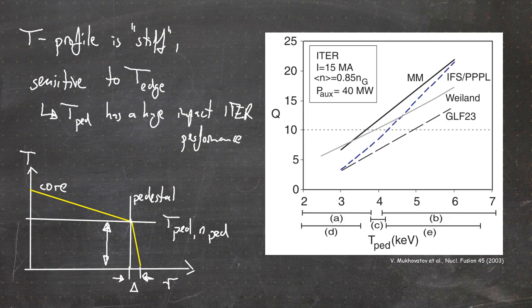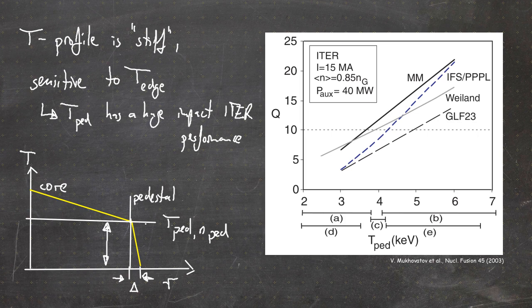On the right-hand side, you can see a figure showing the fusion gain Q of ITER as a function of pedestal temperature, estimated with various models. All of these models agree that the higher the pedestal temperature, the higher the Q factor of ITER. This is why the pedestal temperature has such a huge impact on ITER performance.